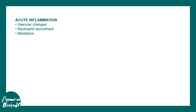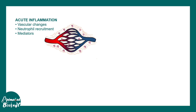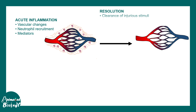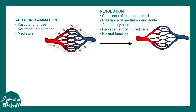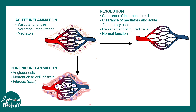In acute inflammation, neutrophil recruitment and extravasation would happen, vasodilation would occur, and neutrophils would populate the nearby area. Eventually, given time, there would be resolution of these changes — clearance of the injurious stimuli, replacement of injured cells, and restoration of normal function. In chronic inflammation, things are more difficult and messy.